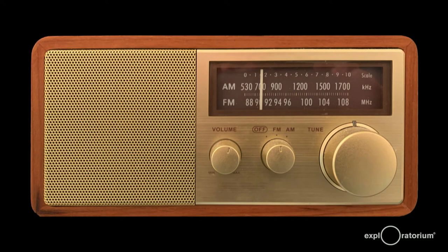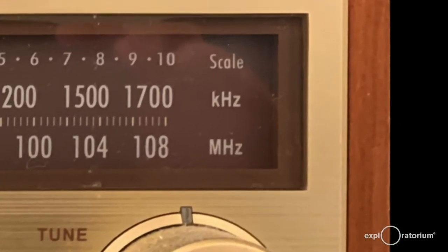You may be familiar with Hertz if you're old enough to have listened to your music on one of these. Kids, this is called a radio. If you look at the right end of the scales, you'll see that AM radio is measured in kilohertz, thousands of vibrations per second, and FM is measured in megahertz, millions of vibrations per second. Here we're talking about the frequency of the radio wave carrying the musical information.